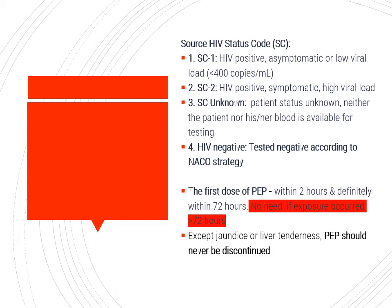The HIV status code of the source patient is also categorized: SC1 means the patient is HIV positive but asymptomatic with a low viral load; SC2 means HIV positive, symptomatic, and with high viral load; SC unknown means the patient's status and sample are not available; and HIV negative means the source is negative.